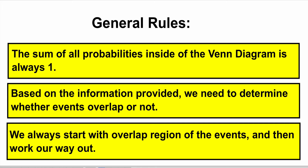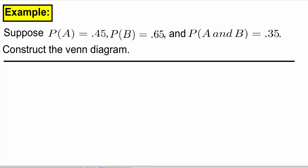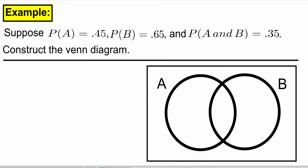Let's look at some examples. Suppose probability of A, B, and probability of A and B are given. We want to construct the Venn diagram. Since probability of A and B is given, that means the two events A and B must overlap. We start with the overlap area, and that probability is equal to 0.35.